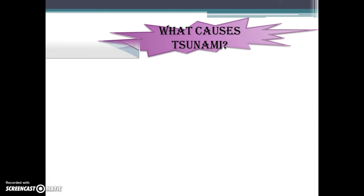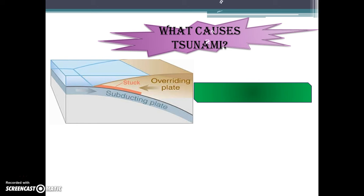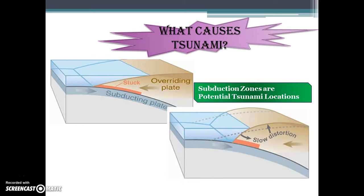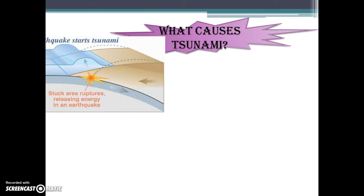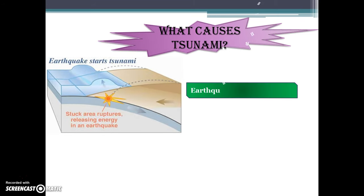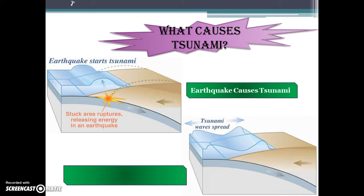What causes a Tsunami? There are four stages. First is the subduction zone, a potential Tsunami location — an area where the oceanic plate is being forced down by tectonic forces. Second stage is the accumulation of seismic energy, which causes slow distortion of the overriding plate. Third is the earthquake-caused Tsunami, where the plate snaps back into its unstrained position. Fourth, the Tsunami races away from the epicenter as moving waves travel out from where the earthquake occurred.